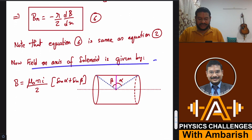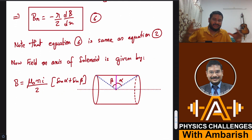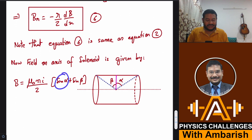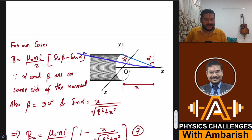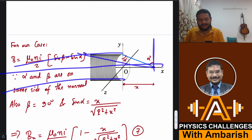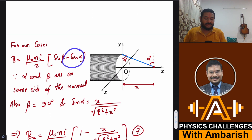The field on the axis of a solenoid is given by B = (μ₀NI/2)(sin α + sin β), where you draw a perpendicular at the right extremity — angle α — and at the left extremity — angle β. For a semi-infinite solenoid, β approaches 90°. Since both α and β are on the same side of the normal, the formula becomes B = (μ₀NI/2)(sin β − sin α), and since β = 90°, sin β = 1.